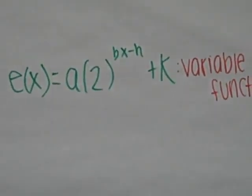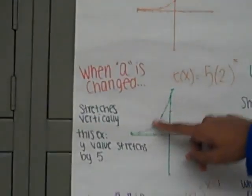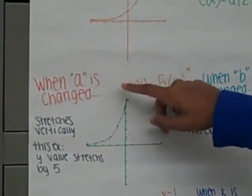When a is changed, the graph stretches vertically, and in this example, the y value stretches by 5 because it's 5 times 2 to the x. As you can see, this slopes up quicker than this one.